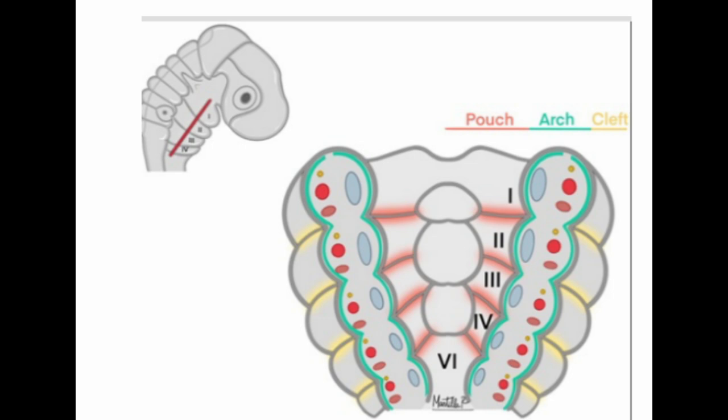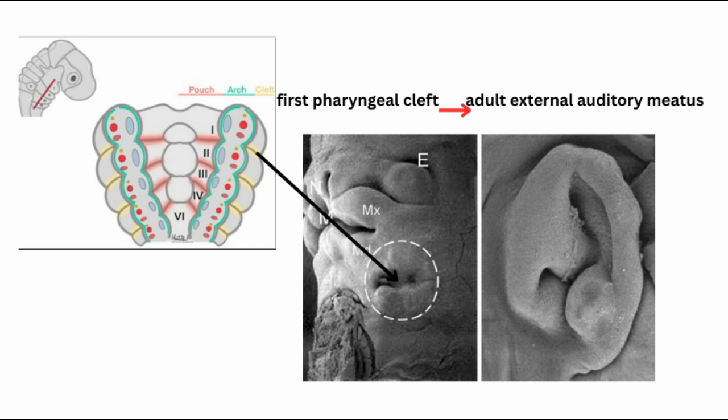Each arch has its own vascular component, nervous component, muscular component, and skeletal component, developing into various structures in life. Regarding the pharyngeal clefts, the first pharyngeal cleft forms the epithelium of the external auditory meatus. Lateral to the first pharyngeal arch, the pharyngeal cleft later forms the external auditory meatus.